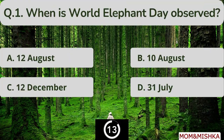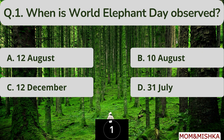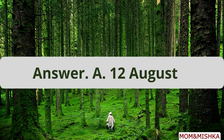When is World Elephant Day observed? World Elephant Day is observed on 12th August. Option A.